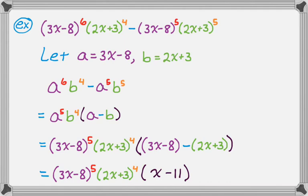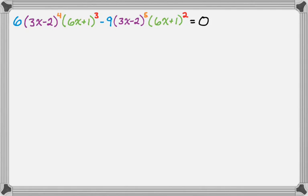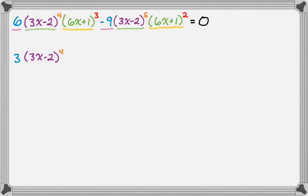I'm going to do one more problem to show you why you use this process — we want to factor to actually solve the equation. We have 6 times the quantity 3x minus 2 to the 4th times the quantity 6x plus 1 to the 3rd, minus 9 times the quantity 3x minus 2 to the 5th times the quantity 6x plus 1 squared, equals 0. The constant terms are 6 and negative 9, so I take out a 3. The smallest power of 3x minus 2 is the 4th, so I take that out. The smallest power of 6x plus 1 is the 2nd, so I take that out. Now I open a parenthesis and see what's left.